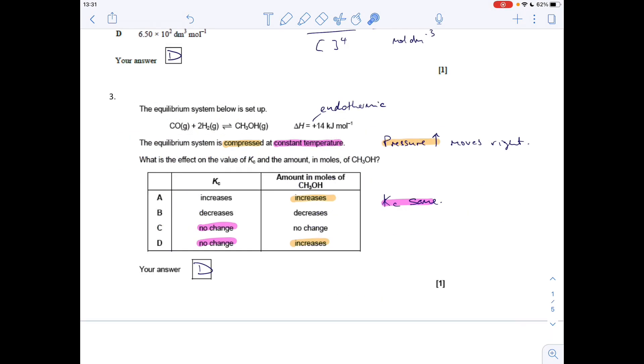Question three: we've got this equilibrium system with positive ΔH, so the forward reaction is endothermic. The equilibrium system is compressed at constant temperature. If you increase the pressure, the equilibrium moves to the side with the fewest moles, so it goes to the right. In other words, the moles of methanol will increase - so A and D would be okay for that. The temperature's kept constant, meaning Kc stays the same. C and D are okay for Kc, so D must be the answer.